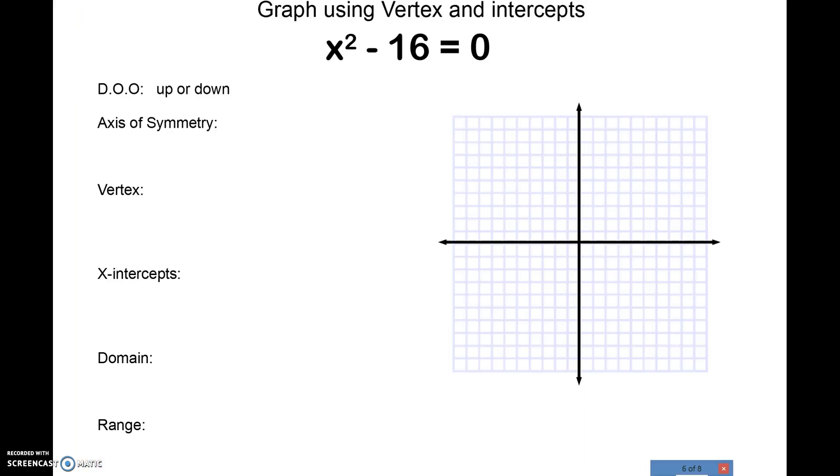So now let's put this all together into a graph. Let's graph this one together. So our A is 1, B is 0, C is negative 16. So the direction of opening is up since A is a positive number. Our axis of symmetry is x equals 0 because the B is 0. We know it's going to be 0 over a number. If I plug that in, I get negative 16 for the y of my vertex. We know this was the x of my vertex, this is the y. So my vertex is negative 16.